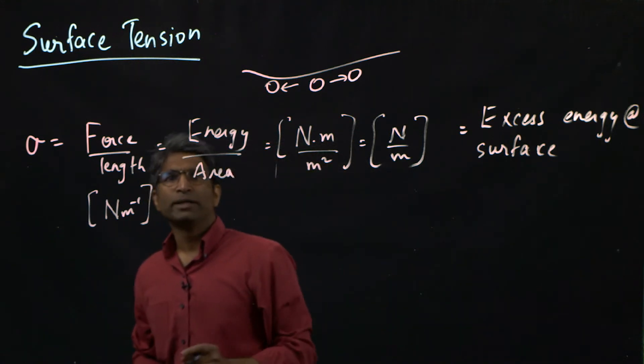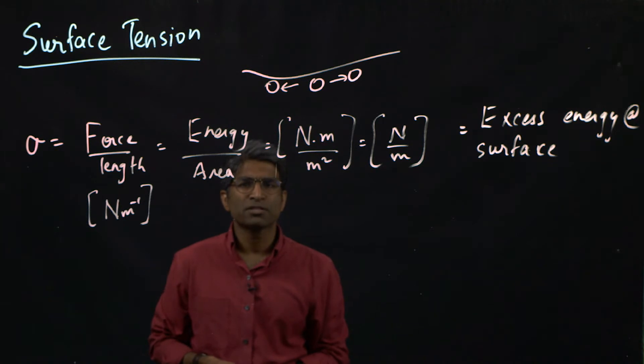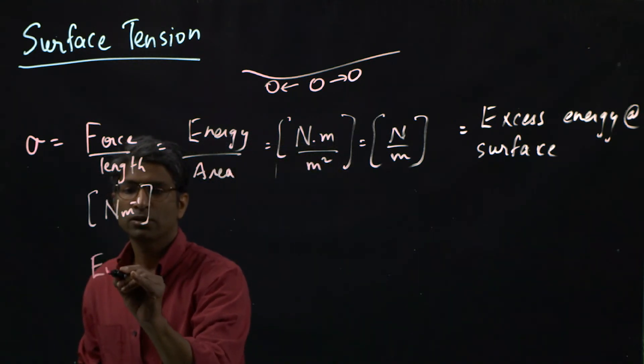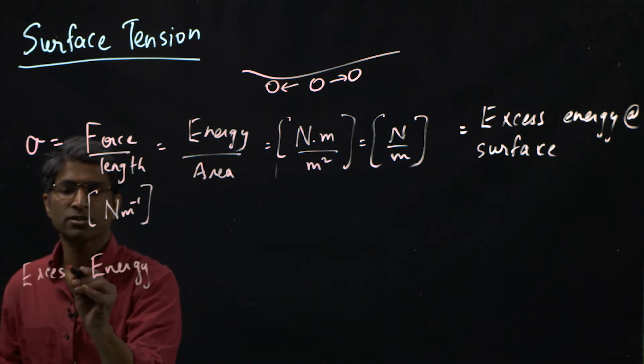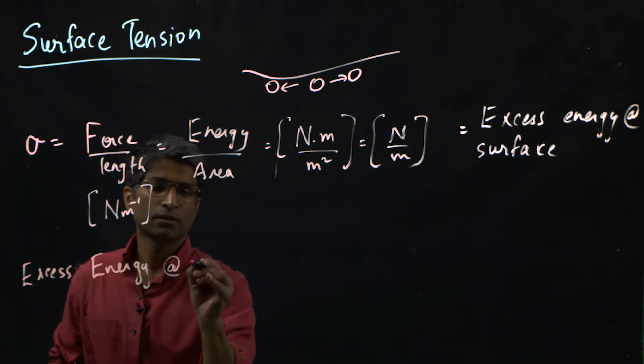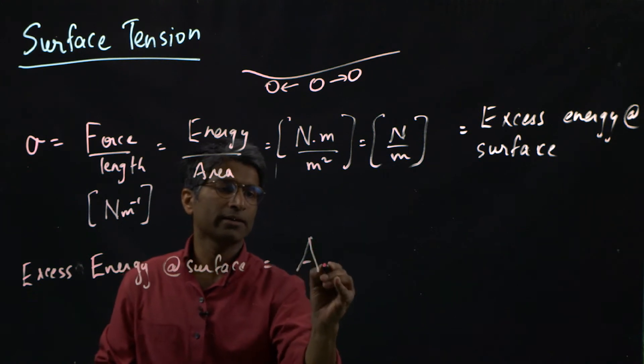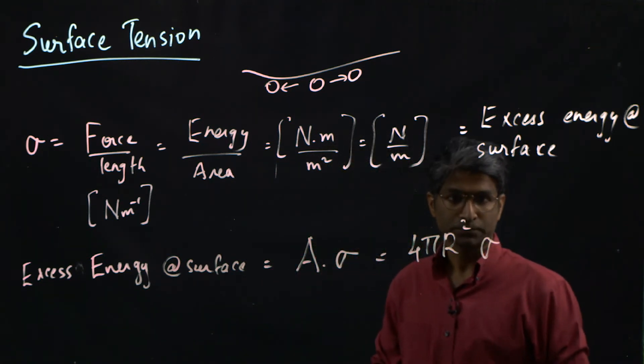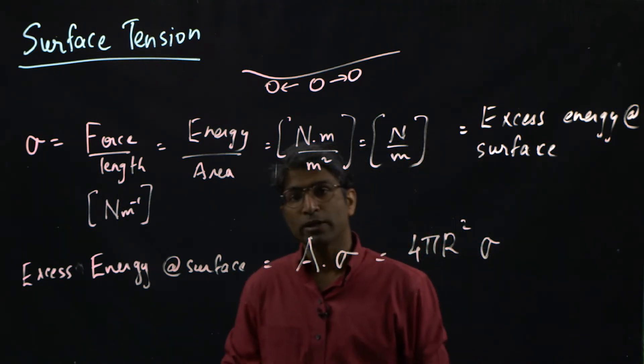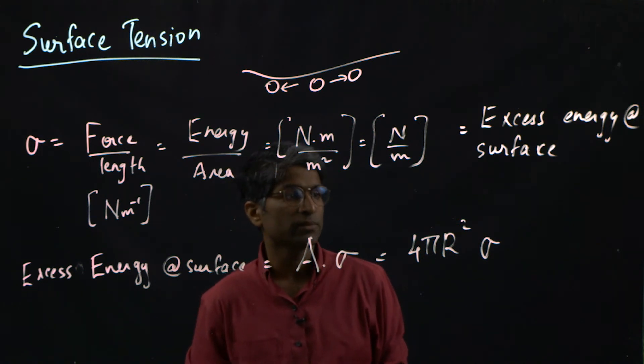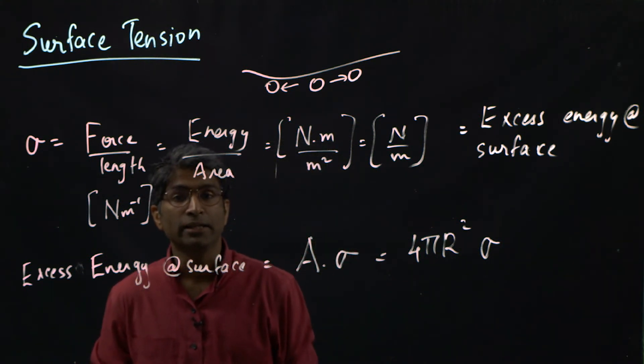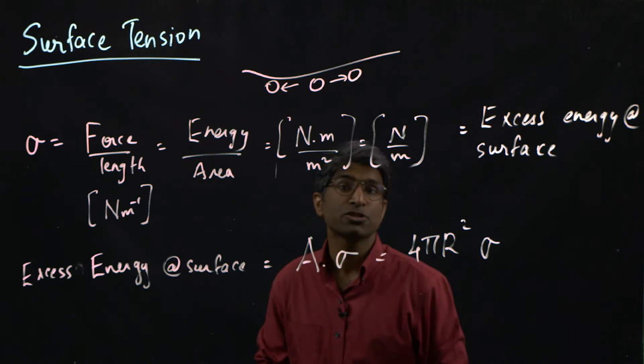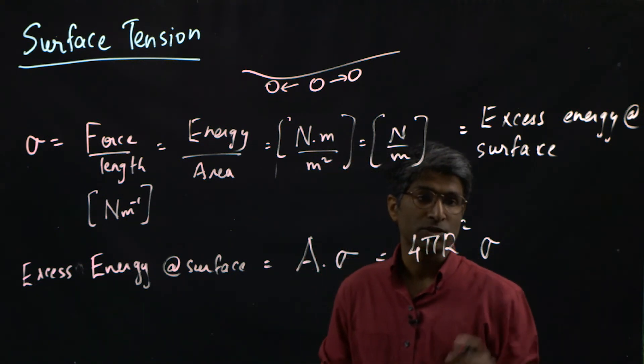So now if I have a finite blob of fluid, that blob of fluid if it wants to minimize its surface, its excess surface energy will want to minimize the surface area because the total energy, excess energy at the surface would be given by A times sigma which is 4 pi r square times sigma for a sphere. And we know that the sphere for a given volume is the shape that has the least surface area. And that's essentially why any, that's essentially why we get droplets of fluid. That volume of fluid is trying to minimize its surface energy and therefore it decides to assume the form of a sphere so that the surface area is minimized.